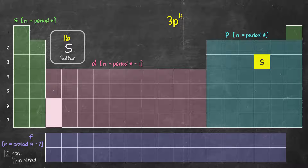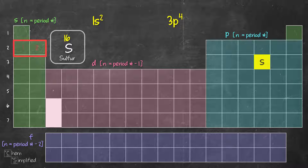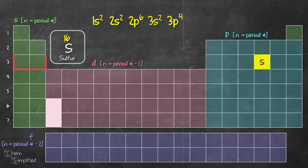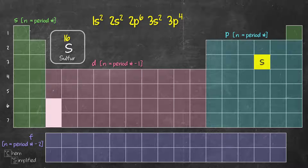Now we start from period 1: S block has 2 elements, so 1s2. In period 2, we encounter S block first — 2s2 — then the P block, which has 6 elements: 2p6. That covers period 2. Moving to period 3, the first block is 3s2, and then we've already addressed 3p4 for sulfur. That's the full electron configuration for sulfur: 1s2 2s2 2p6 3s2 3p4.